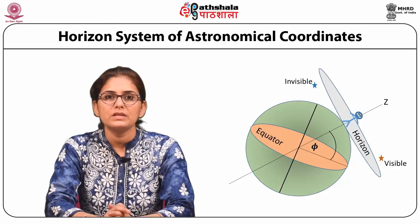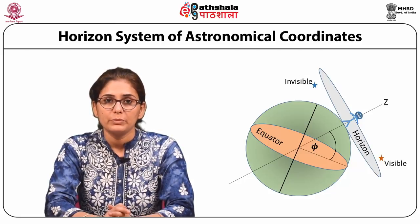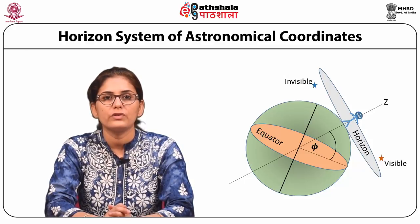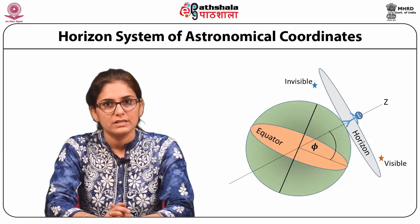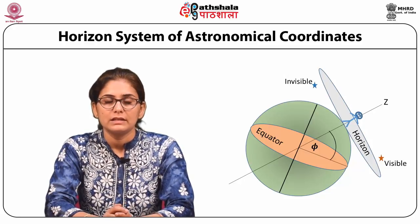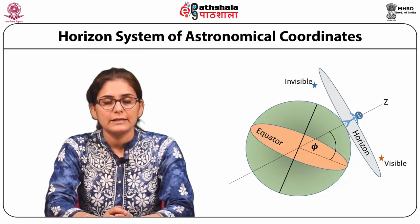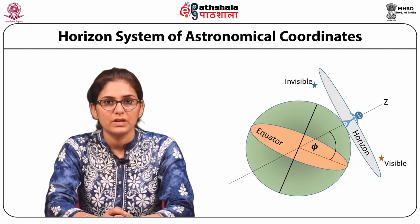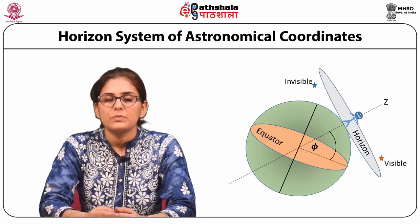We have seen that the two essential quantities in a coordinate system are the fundamental great circle and a reference point, as studied in the terrestrial coordinate system. The same applies to astronomical coordinate systems. For different fundamental great circles and reference points, we have different coordinate systems. In this section we will study four different coordinate systems: the horizon coordinate system, the equatorial coordinate system, the ecliptic coordinate system, and the galactic coordinate system.